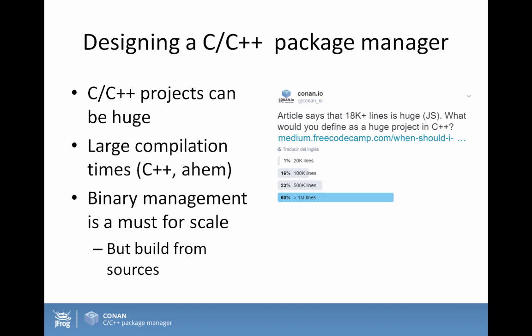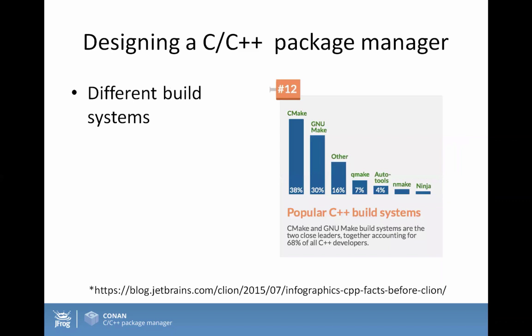What about build systems? C and C++ have different compilers and build systems on every platform. According to JetBrains statistics — they develop the CLion IDE which I highly recommend — there are many different build systems, and CMake, the most popular, covers only about 38% of the market. So a package manager absolutely must be able to handle any build system. It cannot be tied to a specific one, because you cannot discard more than half the market just because your tool doesn't support it.